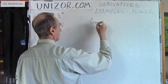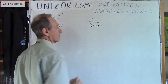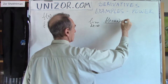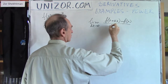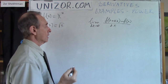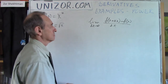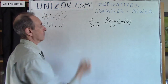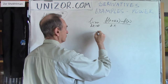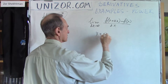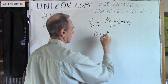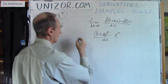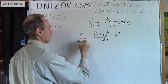What's the definition of derivative? It's the limit as the increment of the argument goes to zero of the increment of the function divided by the increment of the argument. So let's use this particular definition and find the derivative of the function x to the power of n. I have to take (x + Δx)^n minus x^n, divided by Δx, and find the limit as Δx goes to zero.